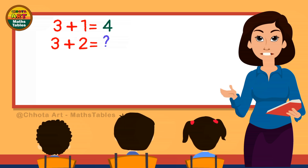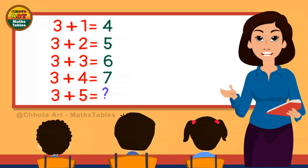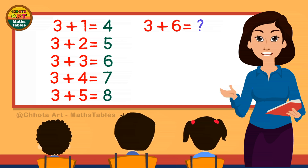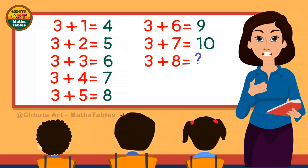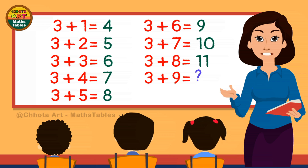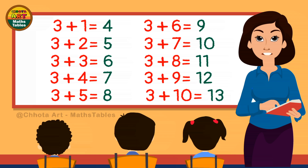3 plus 2 is 5. 3 plus 3 is 6. 3 plus 4 is 7. 3 plus 5 is 8. 3 plus 6 is 9. 3 plus 7 is 10. 3 plus 8 is 11. 3 plus 9 is 12. 3 plus 10 is 13.